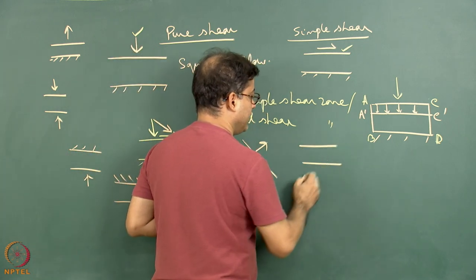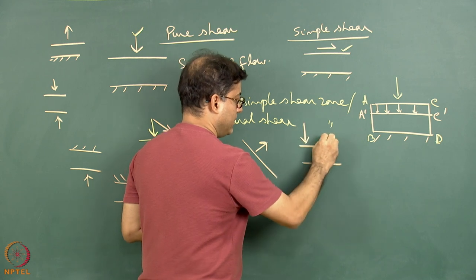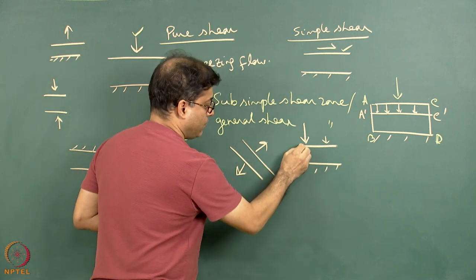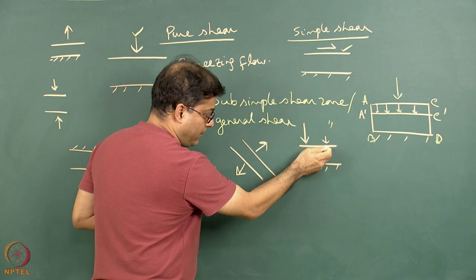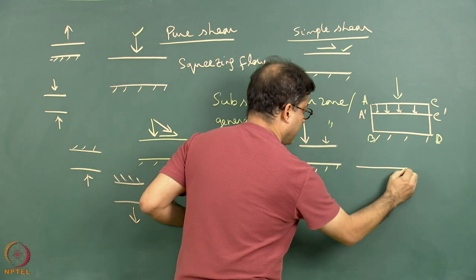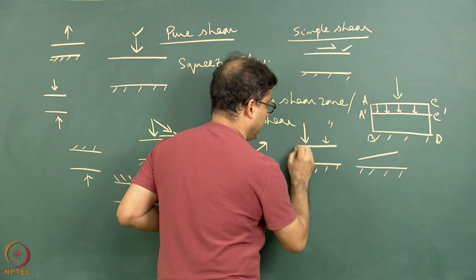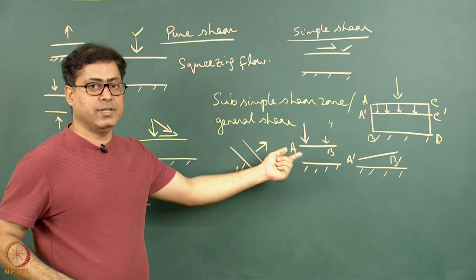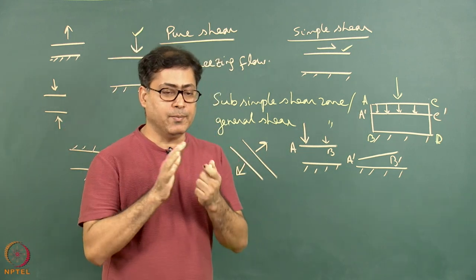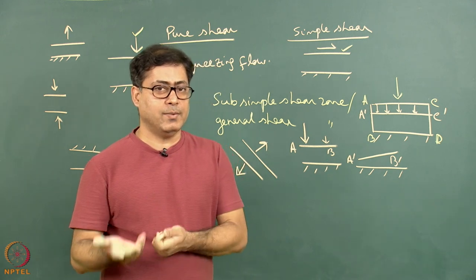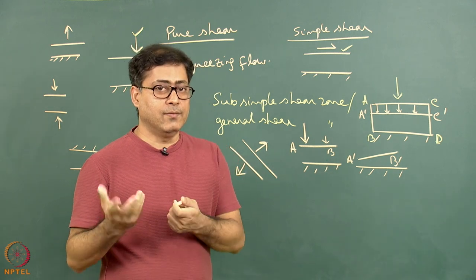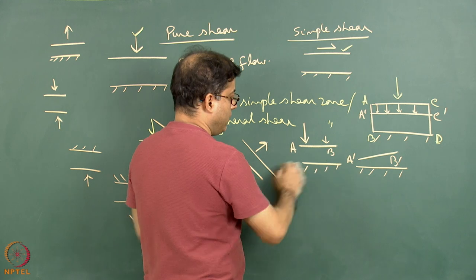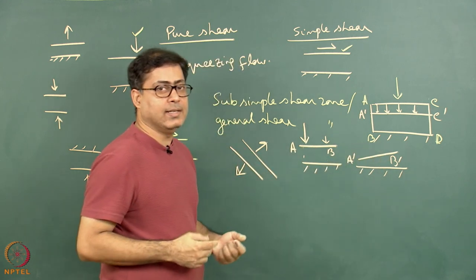For example, consider a shear zone where one part is more compressed and another less, shown by arrows of different sizes. In that case, one point will be displaced further and another less so. Such uneven pure shear is possible in a sedimentary basin where differential sediment accumulation causes one part to be more compacted than another.